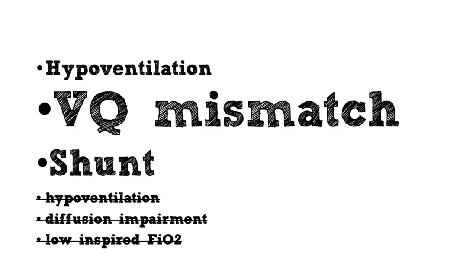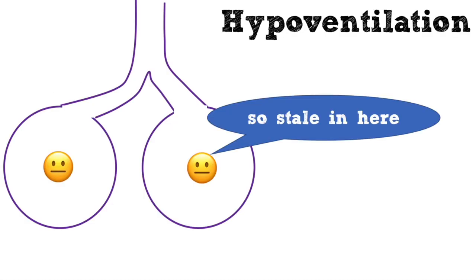We've all gotten lectures on hypoxemia physiology in medical school and residency, and I think most of these lectures are unnecessarily complicated. Unless you're on Mount Everest or you're jacking up an anesthesia machine, there are only really three mechanisms of hypoxemia that you need to worry about: hypoventilation, VQ mismatch, and shunting.